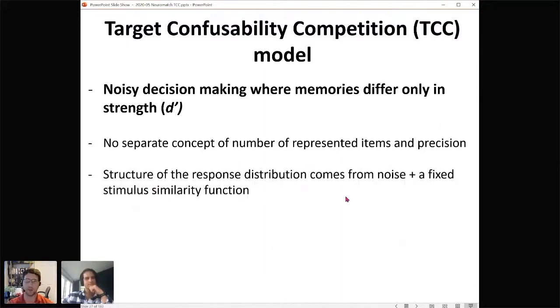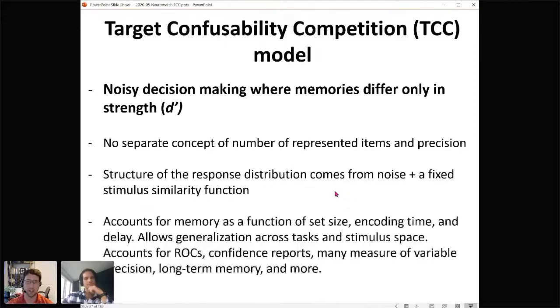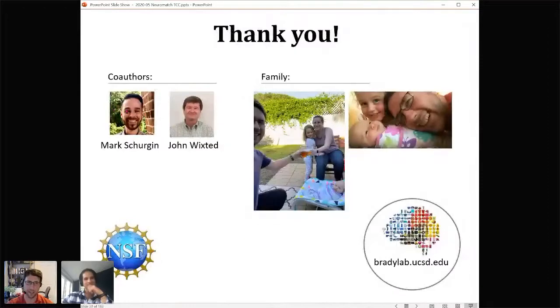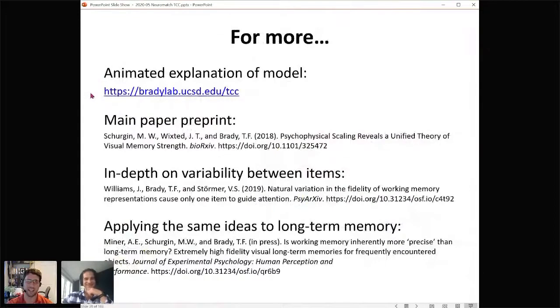So this model argues that noisy decision making where memories differ only in memory strength is what explains errors, with no separate concept of how many items are represented or precision. Instead this noisy channel view, and the structure of the response distribution comes from noise plus the fixed stimulus similarity function. This accounts for memory as a function of set size, encoding time, and delay. It allows generalization across tasks and stimulus space, accounts for ROCs, confidence reports, measures of variable precision, long-term memory, and lots more. Thanks to my co-authors in this paper and my family, especially my wife for watching both kids right now. Here's where you can go if you want more, thanks.